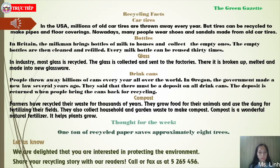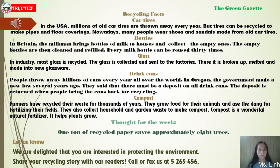Glass: In industry, most glass is recycled. The glass is collected and sent to the factories. There, it is broken up, melted, and made into new glassware. Drink cans: People throw away billions of cans every year all over the world. In Oregon, the government made a new law several years ago. They said that there must be a deposit on all drink cans.